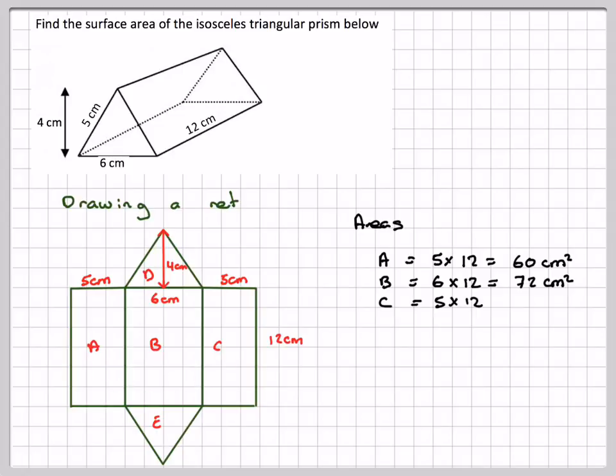C is going to be the same as A, which is 5 times 12, which is 60 centimetres squared.